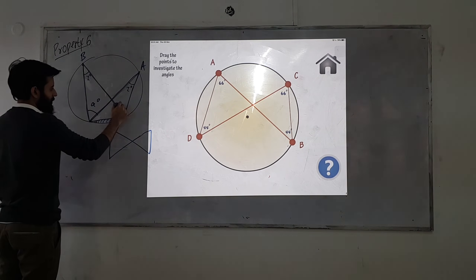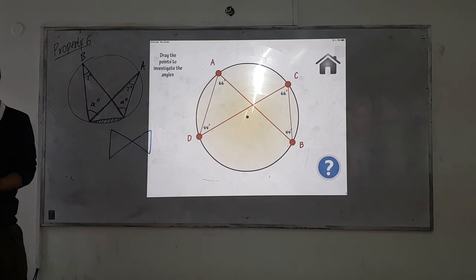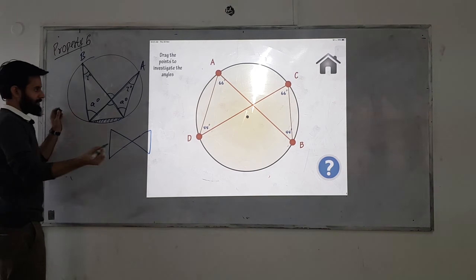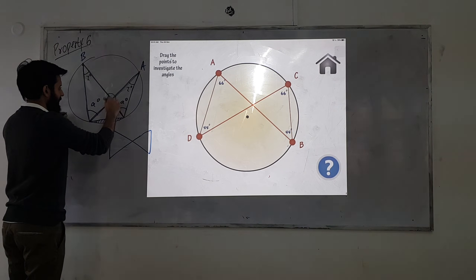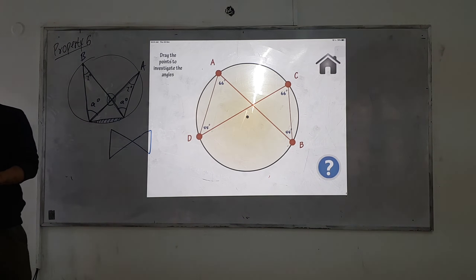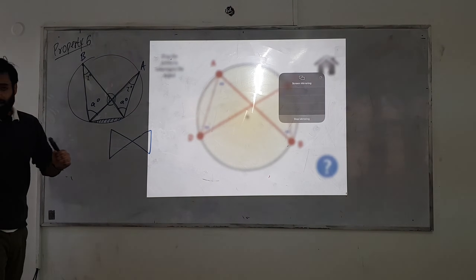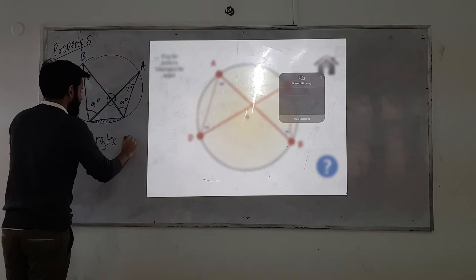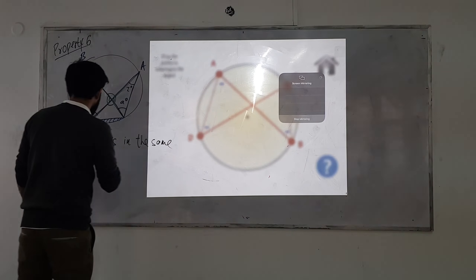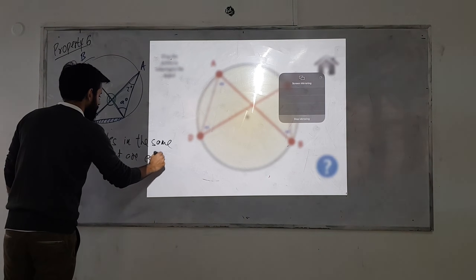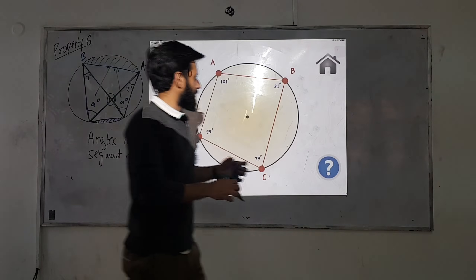So if this angle is 8 degrees, what will the other angle be? Also 8 degrees. There's one more thing here — that has to do with angle properties, not circle properties specifically: vertically opposite angles are equal. So your angles will be the same because of being vertically opposite. Let's write this property down: angles in the same segment are equal.